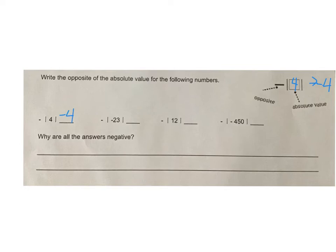The next one, the opposite of the absolute value of negative 23, is going to be positive 23. Then we're going to take the opposite of that, which would be negative 23. The next one is the opposite of the absolute value of 12. So think about it. The absolute value of 12 is 12. The opposite of that is negative 12.